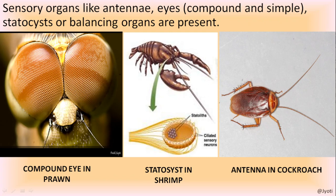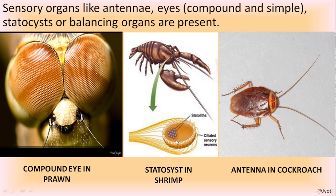Another sensory organ is the statocyst - a balancing organ seen in shrimps and prawn. Just near the compound eye, two statocysts are present. These statocysts are the balancing organs, similar to the balancing organ in the human ear. The statocyst consists of ciliated sensory neurons. Inside the statocyst, a fluid is present with particles called statolith particles. These statolith particles along with sensory neurons maintain the balance of the body.